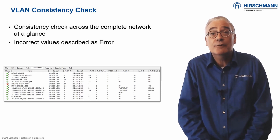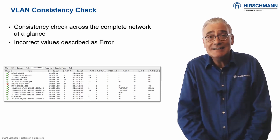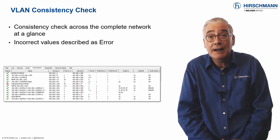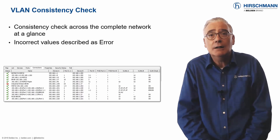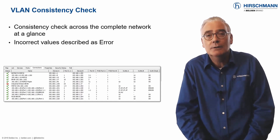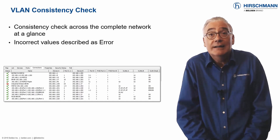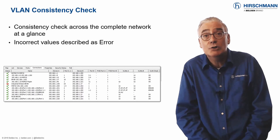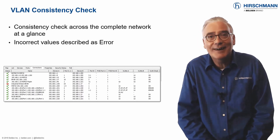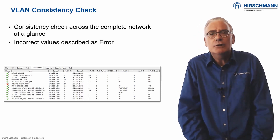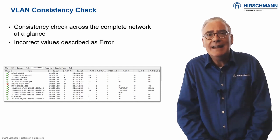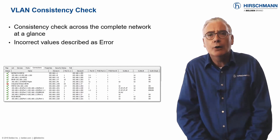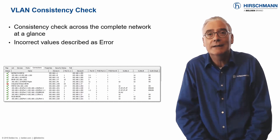As its name suggests, VLAN consistency check provides a configuration consistency check per port across the complete network. The results of the check are displayed per port as OK or error — it's that simple. To diagnose the configuration error, Industrial HiVision offers the two great tools mentioned previously: VLAN viewer and VLAN membership table. So to summarize, if you decide to implement anything other than very basic VLANs on your network, you can rely on Industrial HiVision to provide you with essential visualization and fault-finding tools.